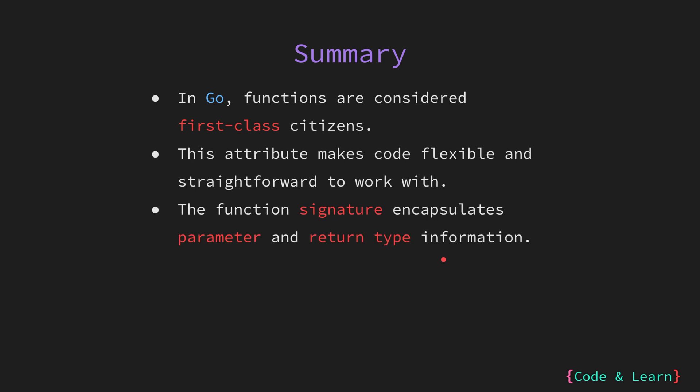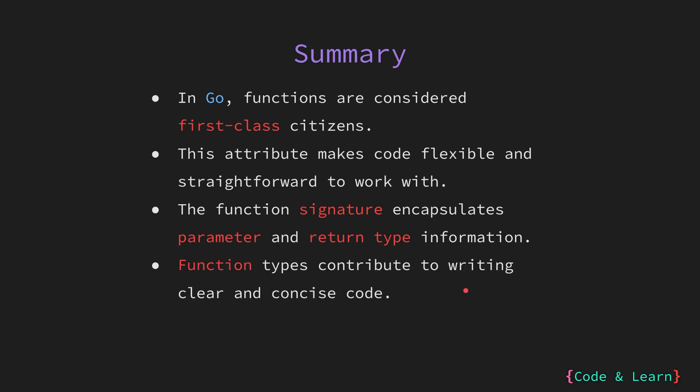Next, we looked at the function signature. The function signature includes vital information about the function, such as the type of parameters it expects and the type of value it returns. This information is crucial for understanding how to use the function correctly and for integrating it into other parts of code. As we saw in the last example, by defining a custom type based on function signatures, you can make your code more expressive and self-documenting, leading to clearer, more concise code because it provides a higher level of abstraction. Additionally, using function types can enable you to write functions that are more generic and reusable.